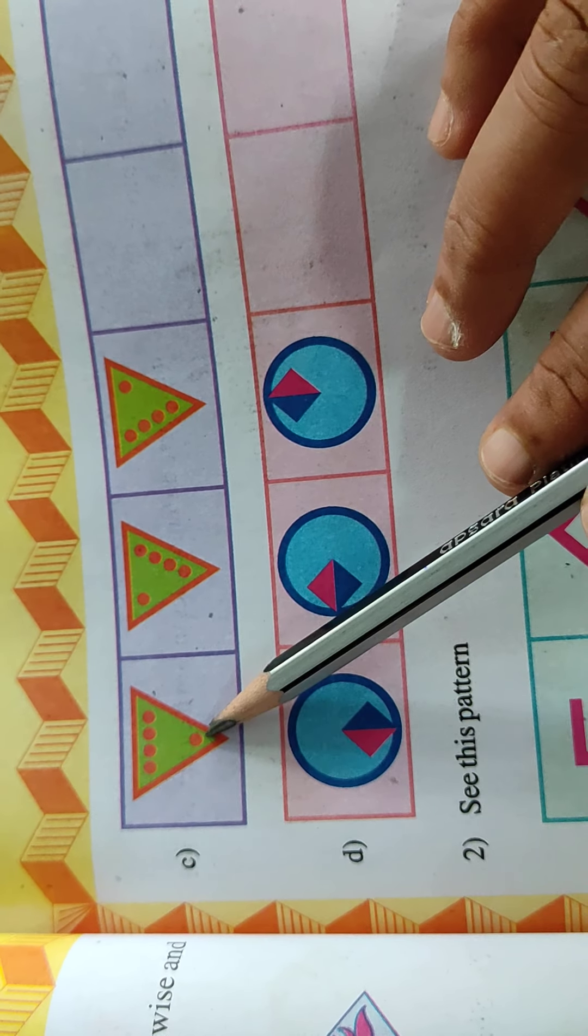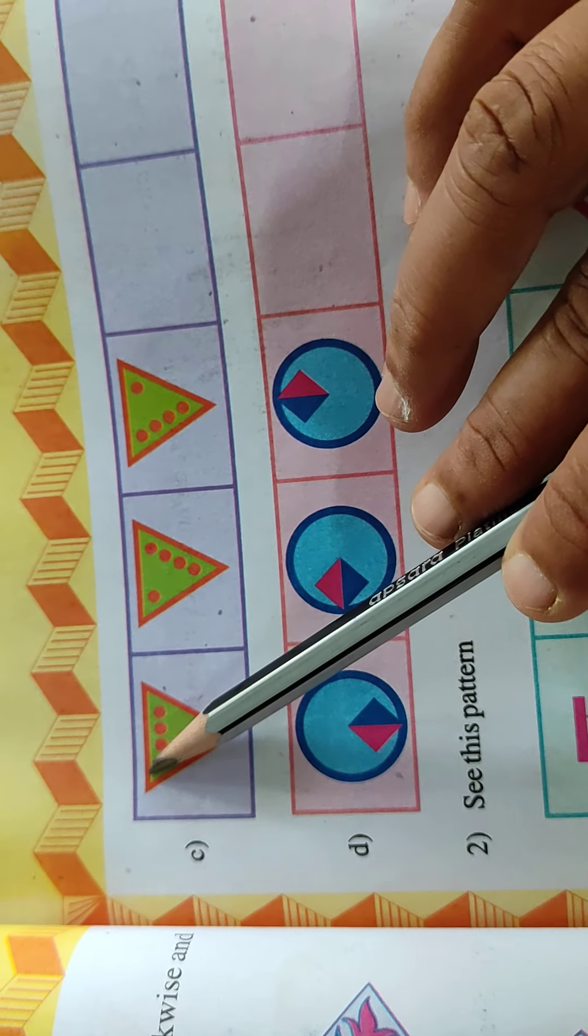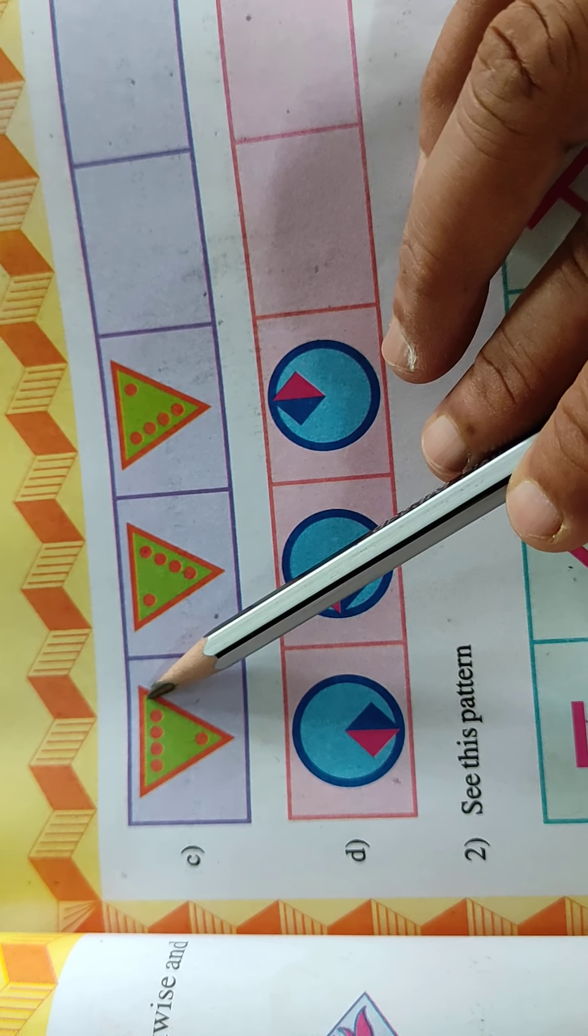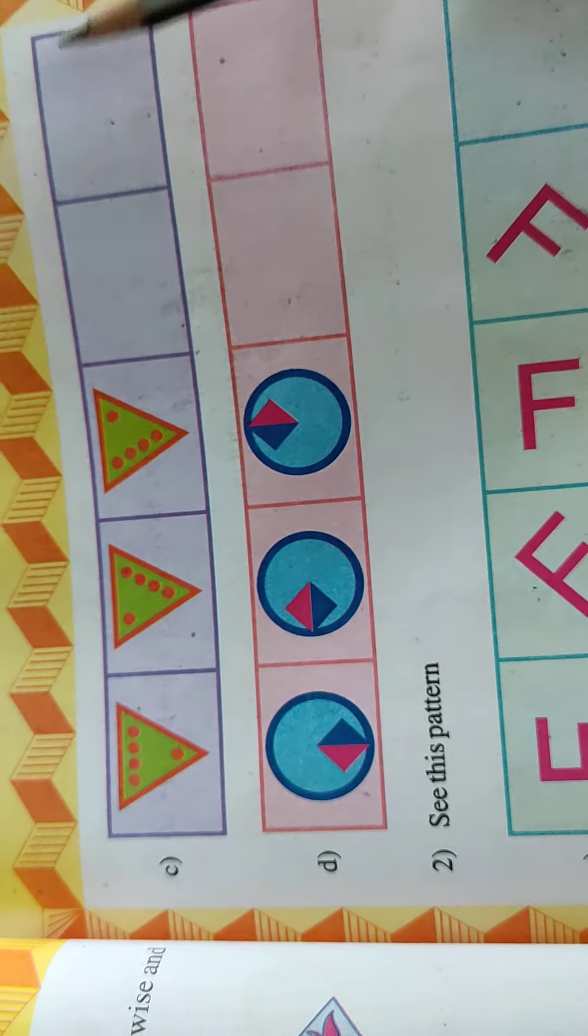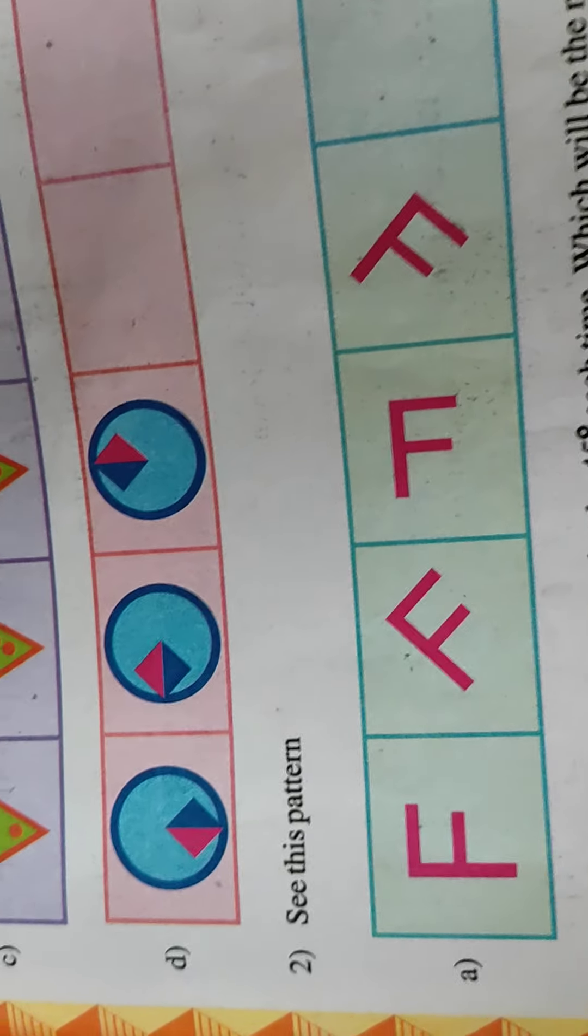Now next. One dot is here, from here to here. So next will be, dot will be here. Change the position. And next, again, same position it will take. So you will draw here.